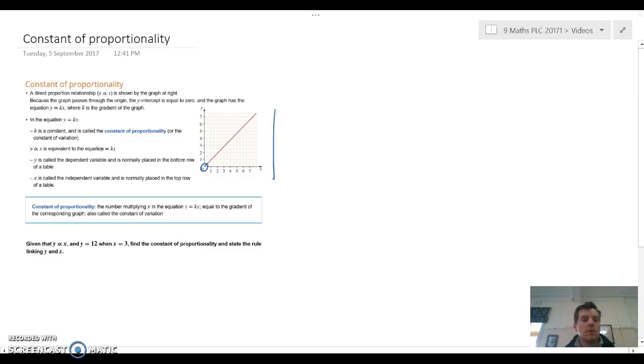So when we have a linear relationship, it means that our gradient, remember we do gradient by rise over run, that is the same throughout the entire graph. So we have a special equation to represent this, and we say that the equation is y is equal to kx. So y and x obviously being the variables, and k is the constant, and that constant is actually a gradient in this situation.